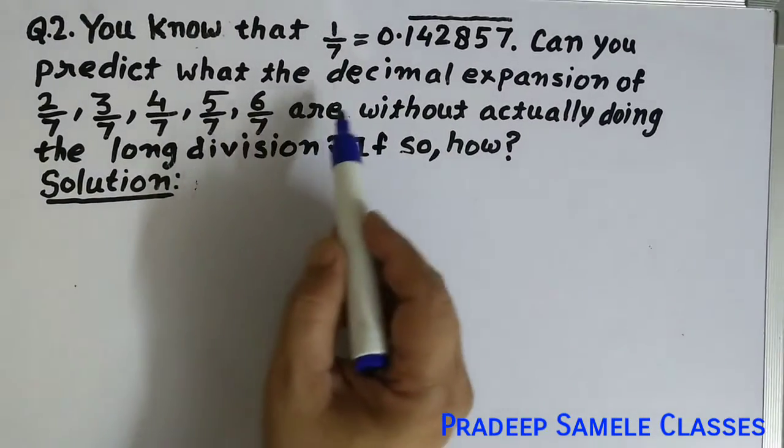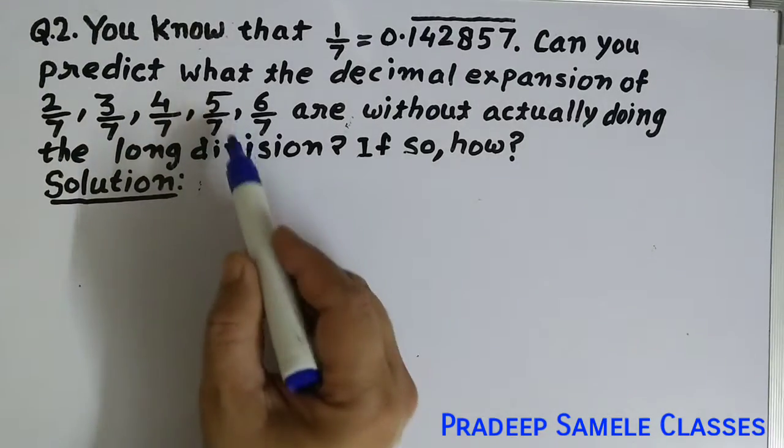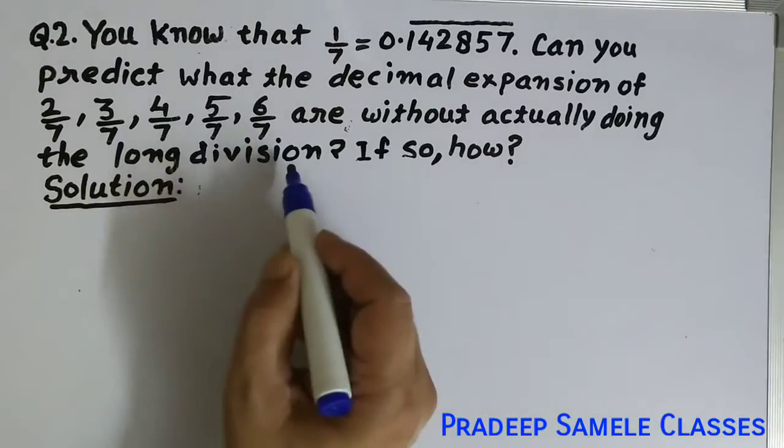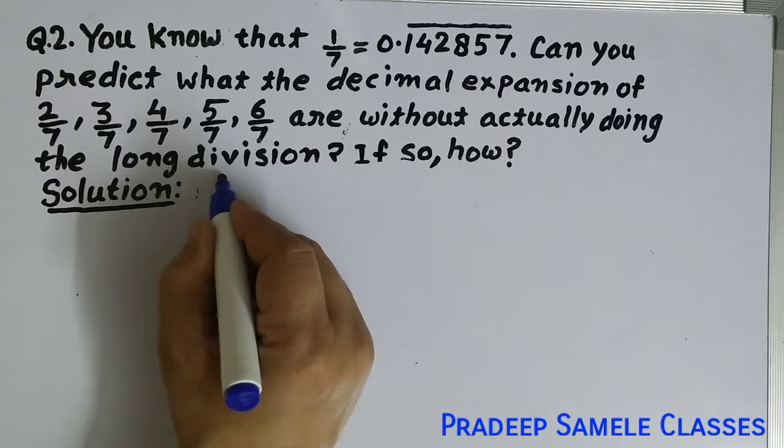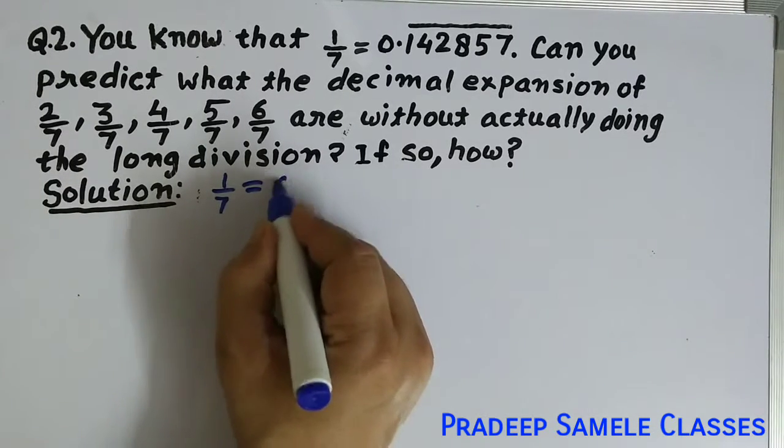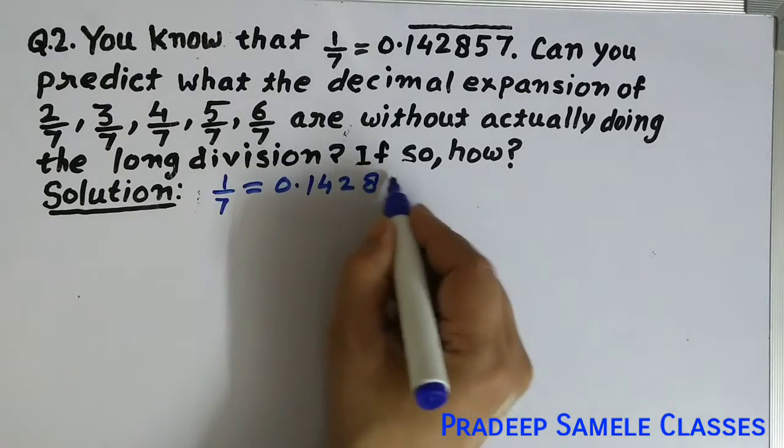If so, how? We need to find the decimal expansion of 2 by 7, 3 by 7, 4 by 7, 5 by 7, and 6 by 7 without any long division. First, we are given that 1 by 7 is equal to 0.142857 with a bar on top.